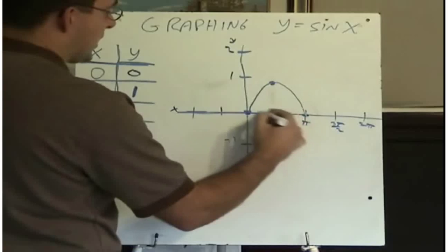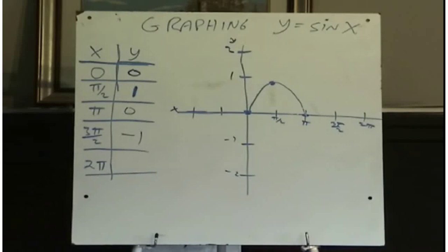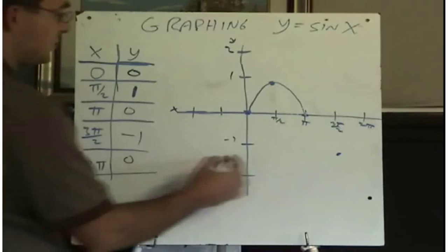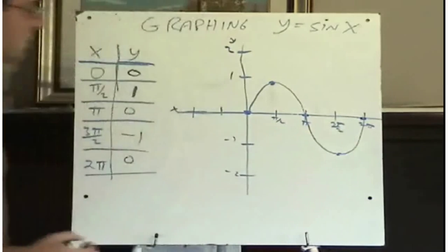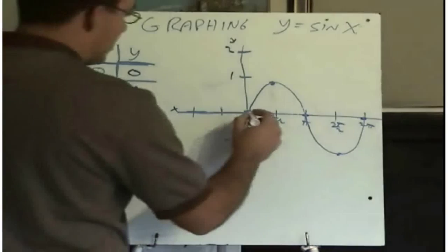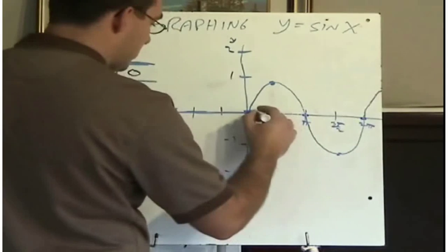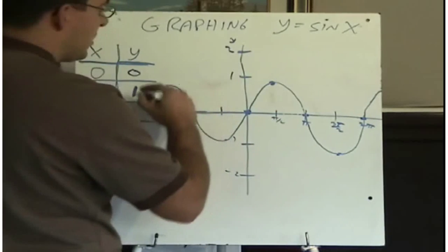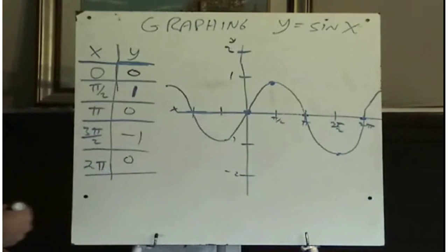I don't draw straight lines because this actually ends up being a nice smooth curve. At 3 pi over 2, you'll find when you put that in the calculator, it is minus 1. And 2 pi is back up at 0. So the graph of y equals sine x looks like this, and it keeps going — it goes on forever in both directions, continuing this sinusoidal wave.